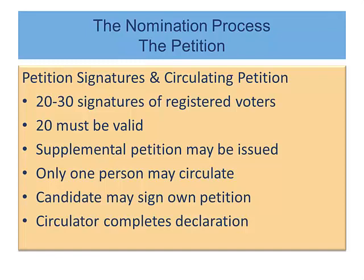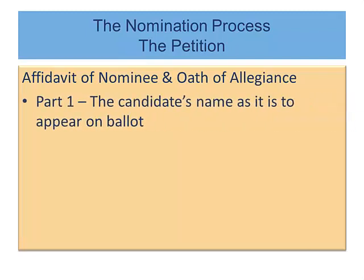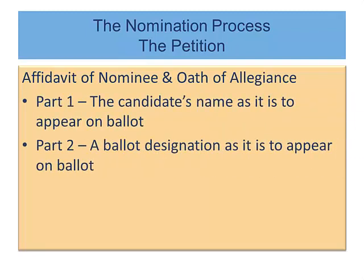Now let's look at the affidavit of nominee and oath of allegiance. This section of the petition has three parts. Parts one and two are contained in the affidavit, and part three in the oath. Part one is the candidate's name as it is to appear on the ballot. Part two is the ballot designation as it is to appear on the ballot, and part three is the oath of allegiance.